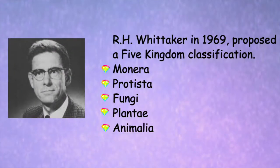R. H. Whittaker, in 1969, proposed a five-kingdom classification. The kingdoms were defined by him and were named Monera, Protista, Fungi, Plantae, and Animalia.